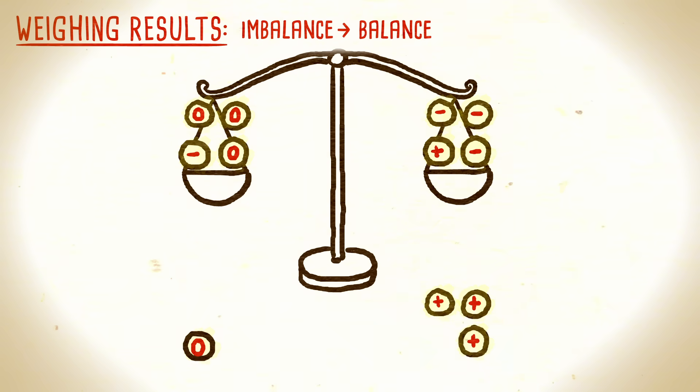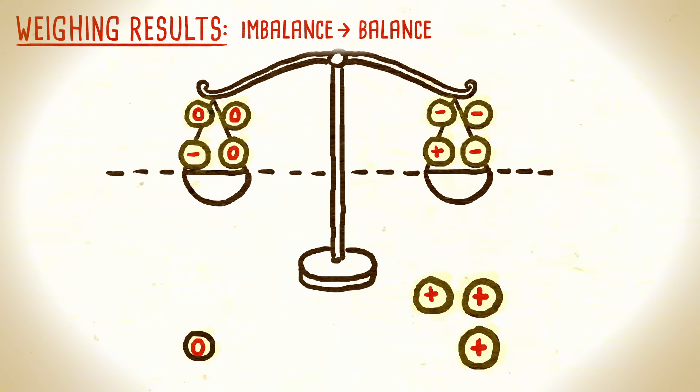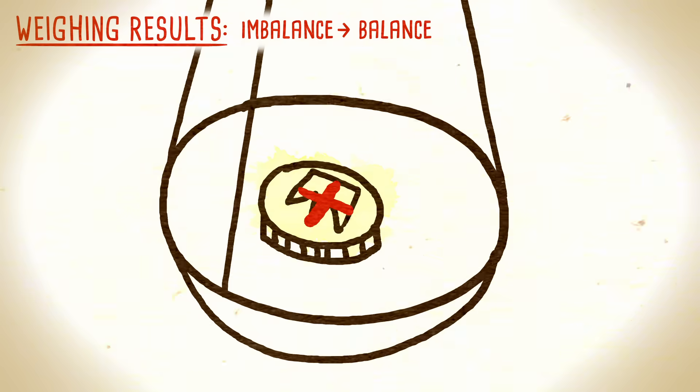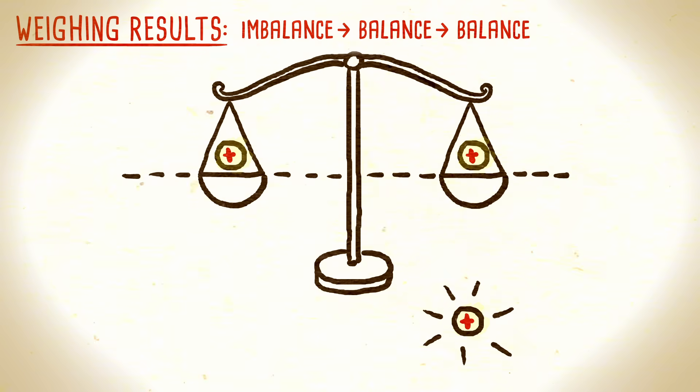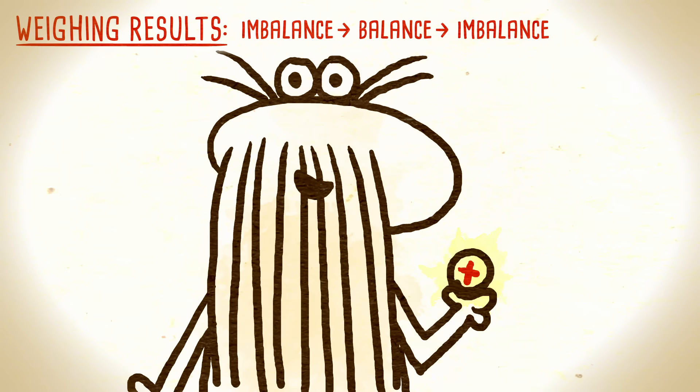Similarly, if the two sides balanced after your substitution, then one of the three plus coins you removed must be the heavier one. Weigh two of them against each other. If they balance, the third one is fake. If not, then it's the heavier one.